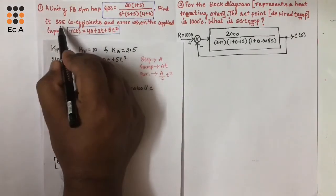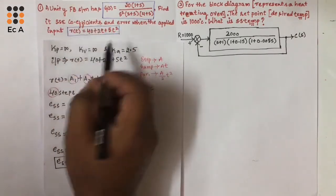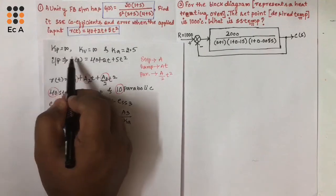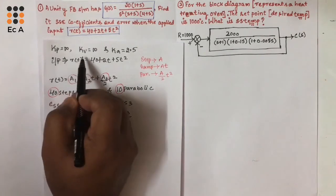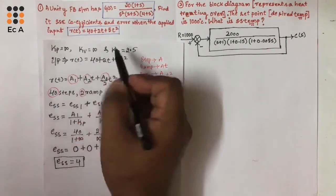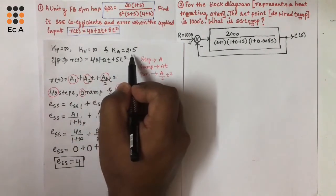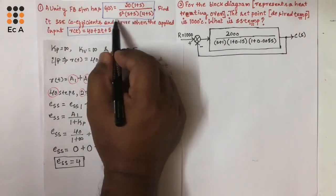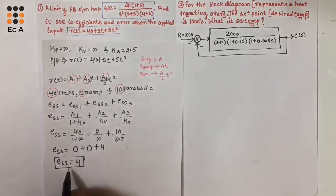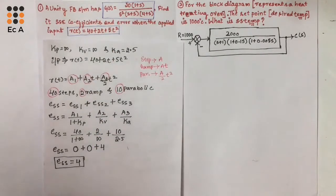So the steady state coefficients are: Kp equals infinity, Kv equals infinity, Ka equals 2.5, and the overall steady state error is 4.